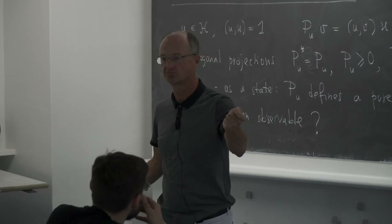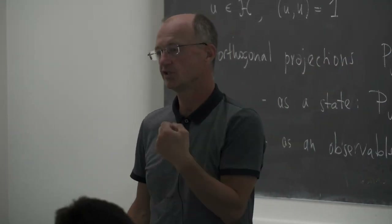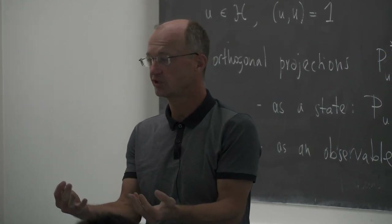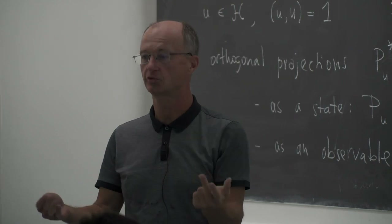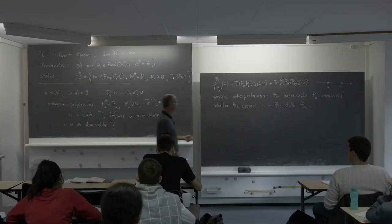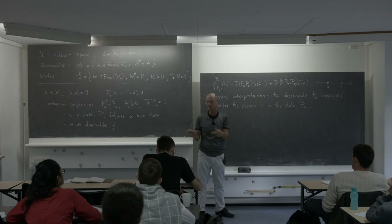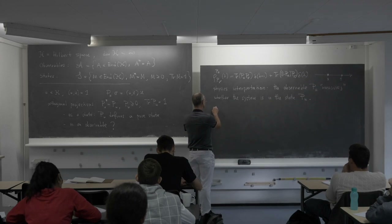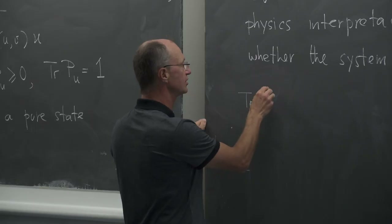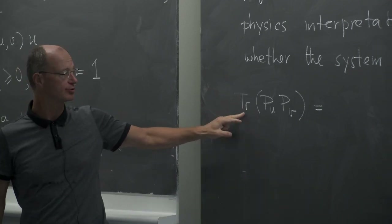In quantum mechanics you are asked: what is the probability that the system is in a given state — typically a pure state defined by some vector. This is a linguistic question which should correspond to a mathematical question. What people actually want to know is: what is the expectation value of this observable — this one-dimensional projection — in a given state?